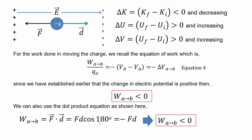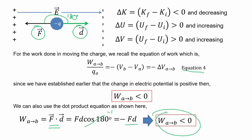For the work done in moving the charge, we recall the equation of work shown in equation 4. Since the change in electric potential is positive, the work from equation 4 must be negative. We can also use the dot product equation: the force and displacement are in opposite directions, so the angle between them is 180 degrees, which results in a negative value. So the work done in moving the negative particle — the electron — is negative.